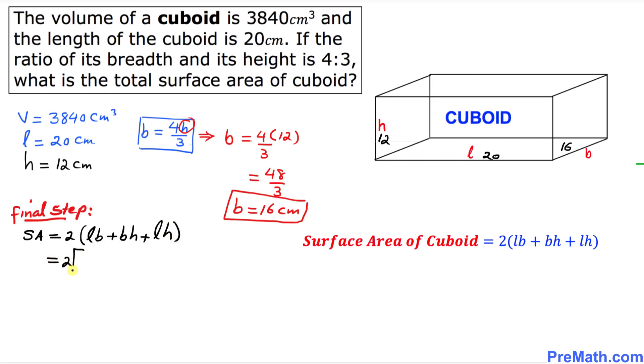I'm going to write down 2 times, in our case length is 20 and b is 16, plus b is 16 times height h is 12, plus L, length is 20, times height is 12.